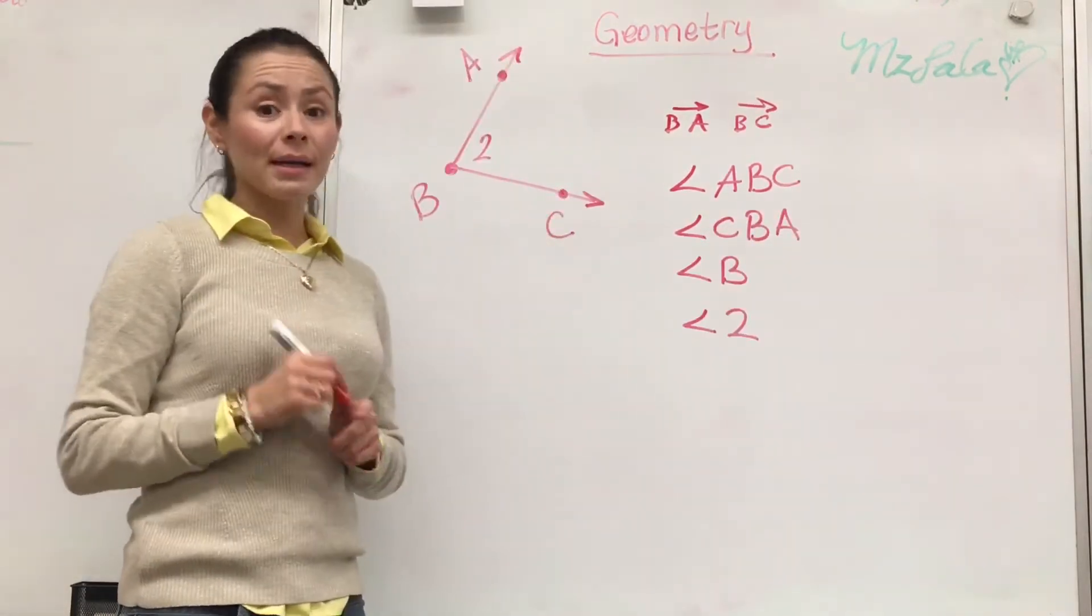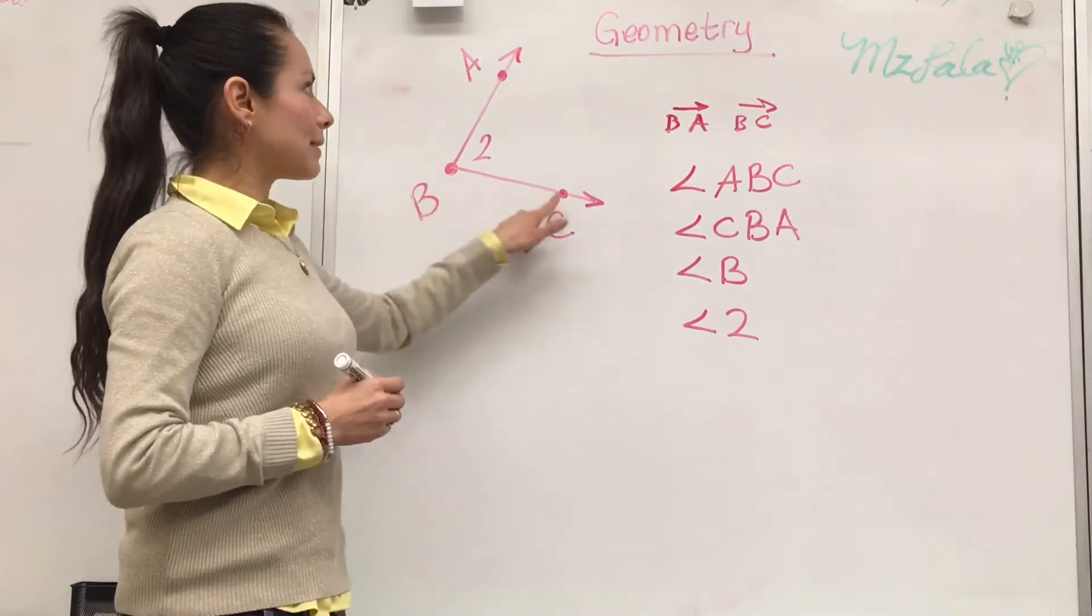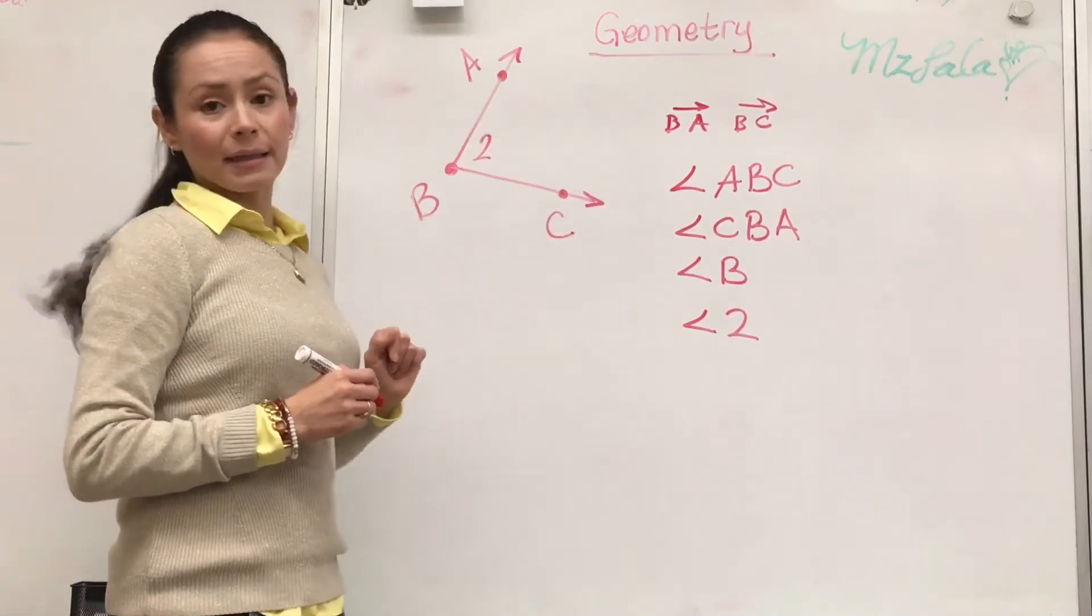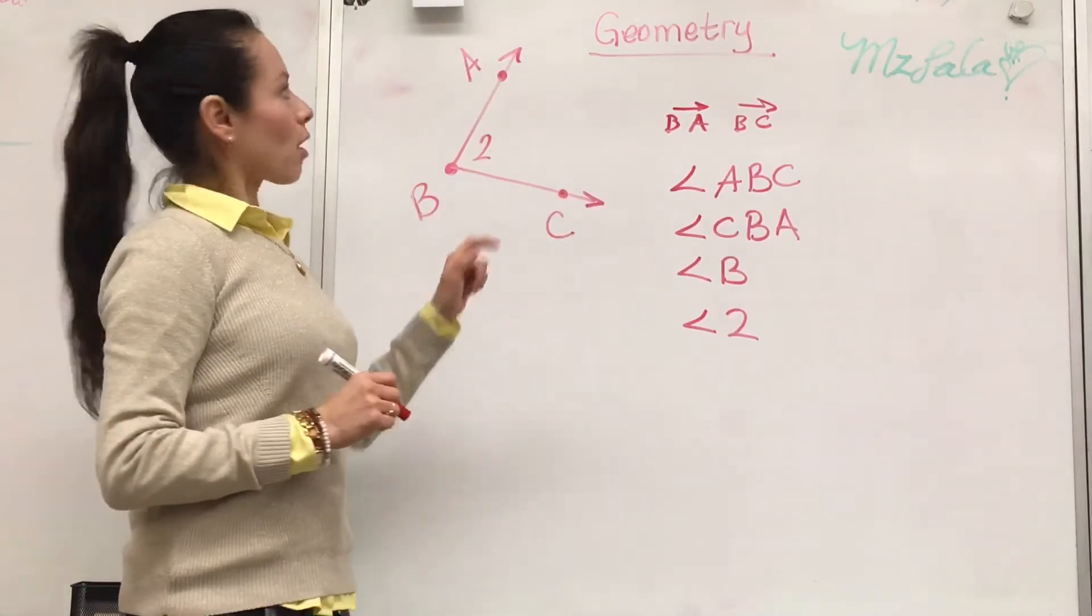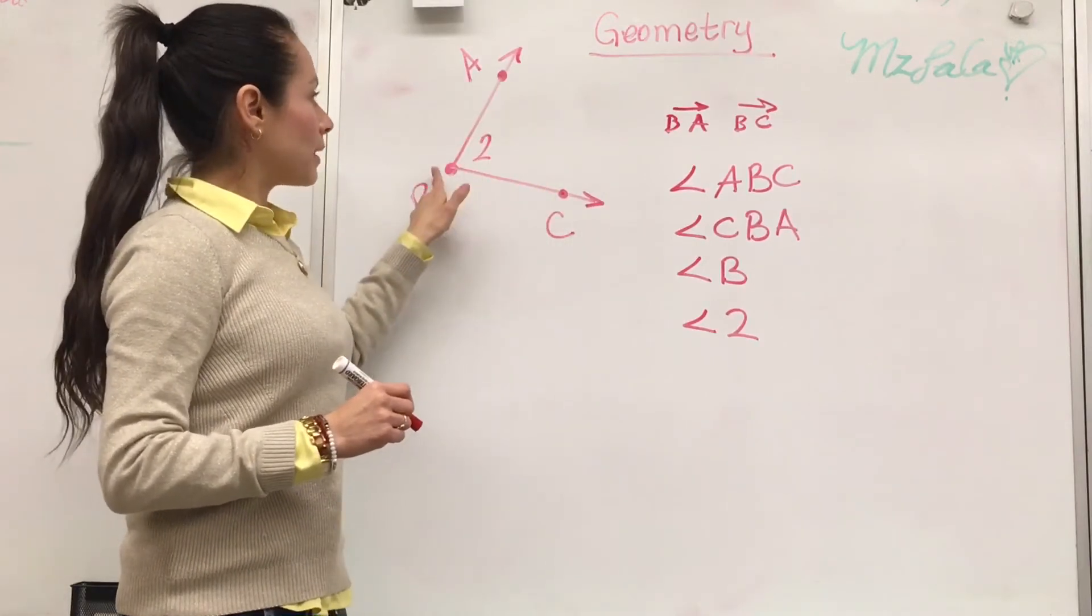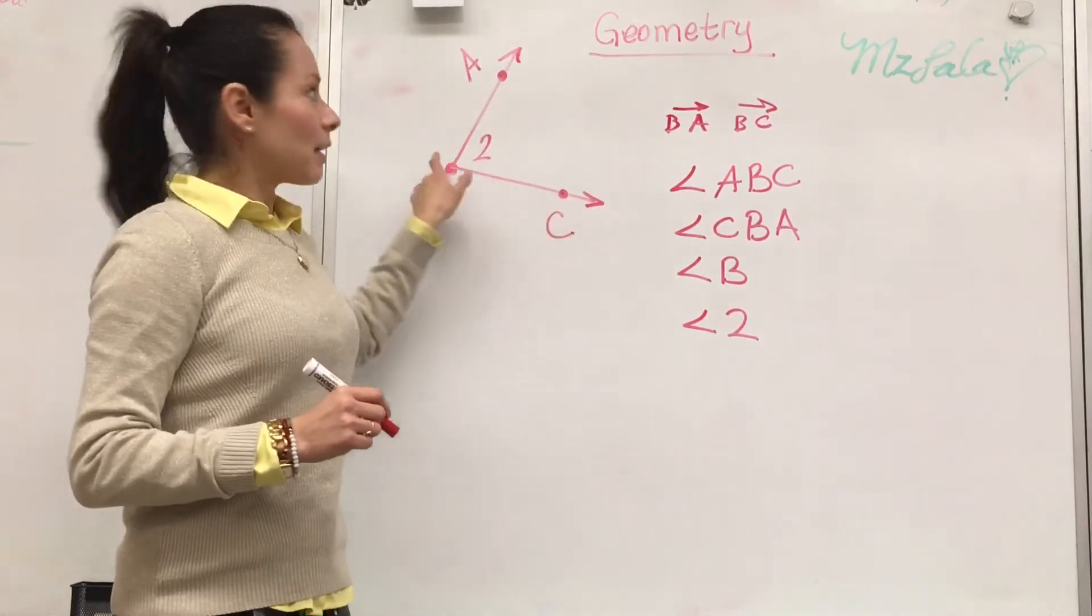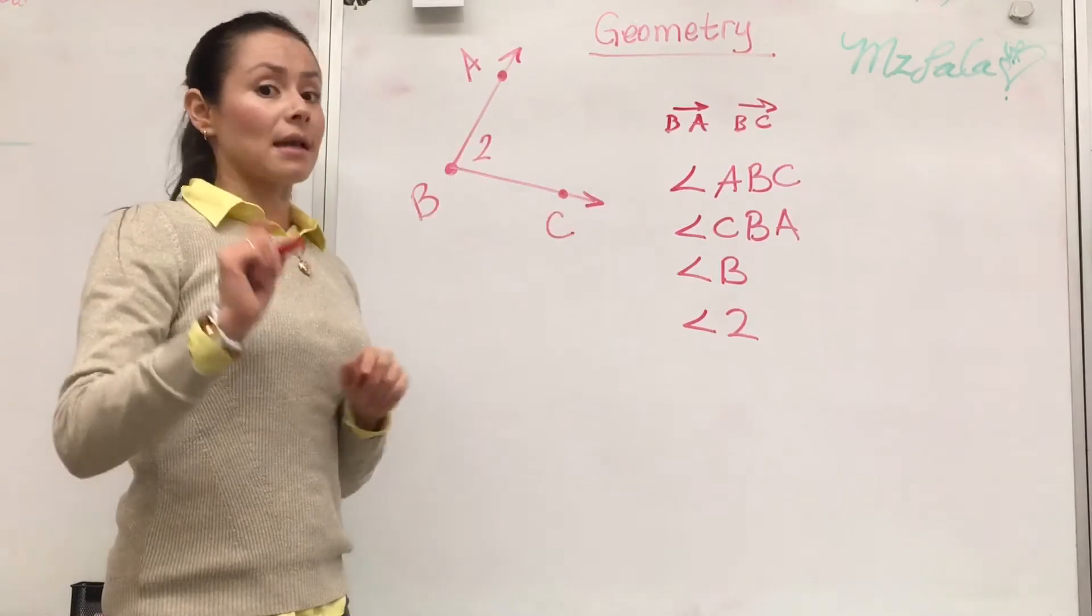But you wouldn't be able to call it angle BCA because it's not connecting this way. You wouldn't be able to call it ACB or BAC. You cannot connect to where it is not connecting.